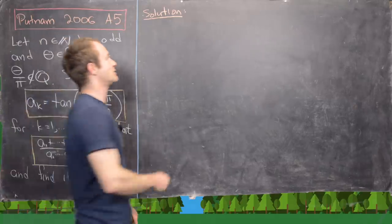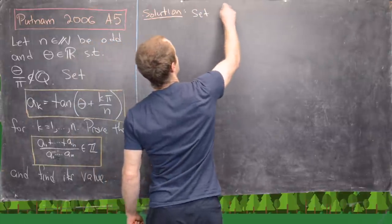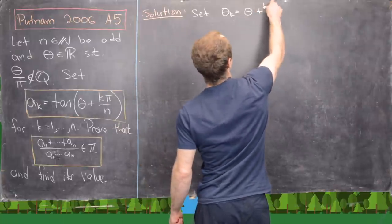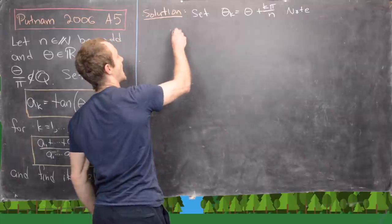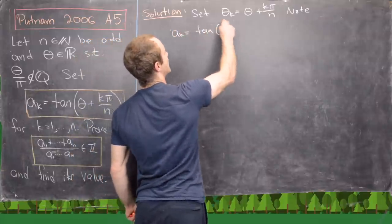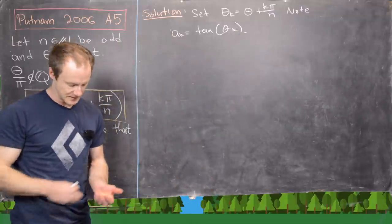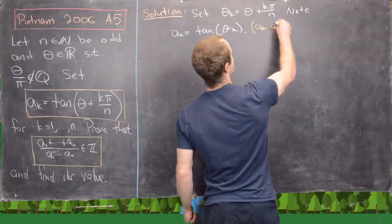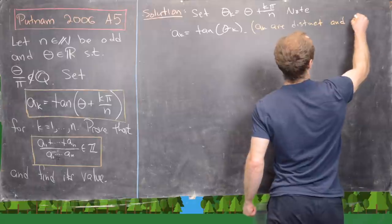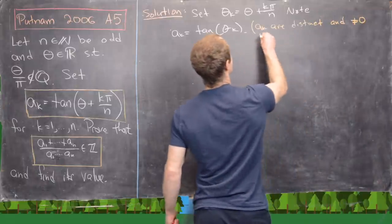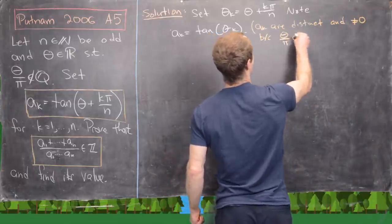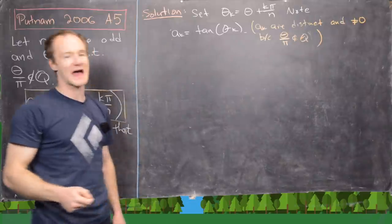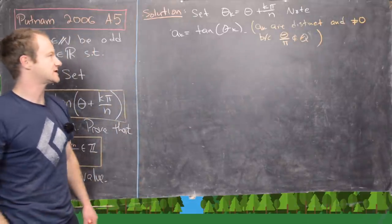Now we're ready to look at a solution. The first thing I'll do is set θ_k equal to θ plus kπ/N, which makes A_k equal to tan(θ_k). Again, the A_k are distinct and not equal to zero because θ/π is irrational. Now we'll construct a polynomial that has these A_k as roots.